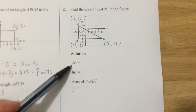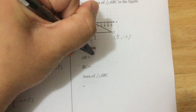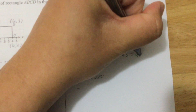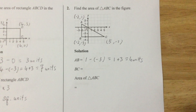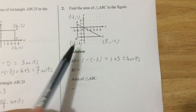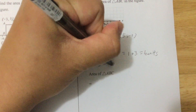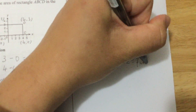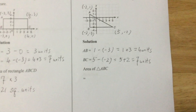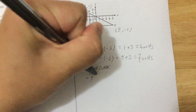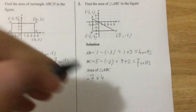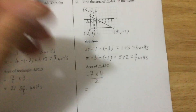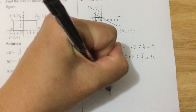Now we calculate AB. Since the x-coordinates are both negative 2, we take the bigger y-value: 1 minus negative 3, so 1 plus 3 gives 4 units. For BC, we have 5 and negative 2, so 5 minus negative 2 gives 5 plus 2, which is 7 units. Finally, the area of the triangle is 7 times 4 divided by 2, which is 28 over 2, that is 14 square units.